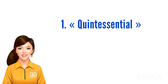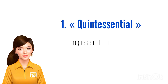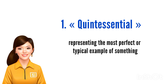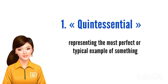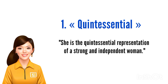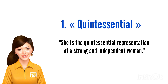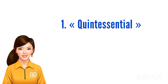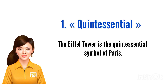The first word we will be learning is 'quintessential.' It is an adjective that means representing the most perfect or typical example of something. For example, she is the quintessential representation of a strong and independent woman. The word can also be used in a sentence like: the Eiffel Tower is the quintessential symbol of Paris.